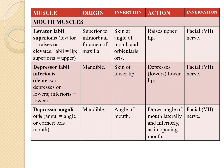The next muscle is the levator labii superioris. 'Levator' means it raises or elevates, 'labi' means related to lips, and 'superioris' means upper. It originates superior to the infraorbital foramen of the maxillae and inserts at the skin at the angle of the mouth and orbicularis oris. Its action is to raise the upper lip. It is innervated by the facial nerve.